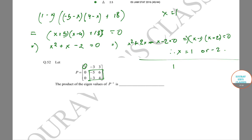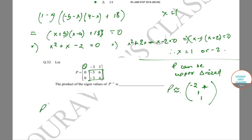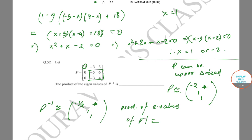Now P can be upper triangularized with eigenvalues 1, 1, and −2 on the diagonal. This implies P inverse has diagonal entries 1, 1, and −1/2, because multiplying two triangular matrices simply multiplies the diagonal entries. So the product of eigenvalues of P inverse equals (−1/2) × 1 × 1 = −1/2. The correct answer is −1/2.